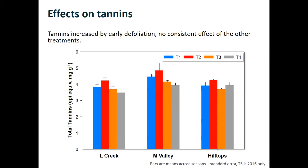The other major fruit component we looked at was tannins, which was somewhat more variable across sites and seasons. Interestingly, the early defoliation tended to give an increase in tannins at all three sites across most seasons. This may be because many tannins are laid down very early in the season and are responsive to sunlight — and that's exactly when we've removed the leaves, so those fruitlets are getting greater exposure to light post-fruit set, which may be driving this change. Again, we saw no beneficial effect on tannins from either the crop removal or the severe summer pruning.